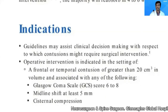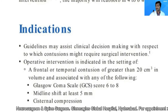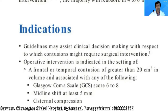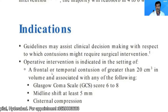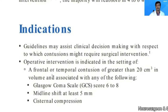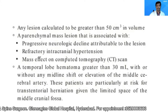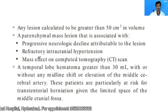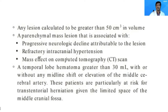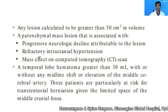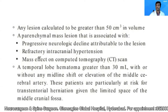The indications we discussed in the previous session — let me go through them quickly. A frontal or temporal contusion greater than 20 cc in volume associated with any of the following: Glasgow Coma Scale less than 8, midline shift of at least 5 mm, cisternal compression on CT scan, any frontal lesion greater than 50 cc in volume, or a parenchymal mass lesion causing progressive neurological decline, refractory intracranial hypertension, or mass effect on CT scan.